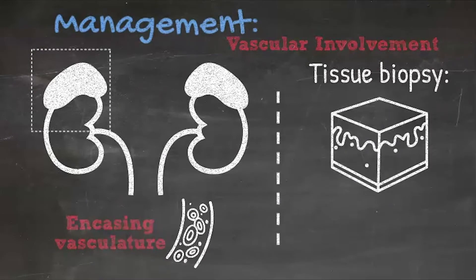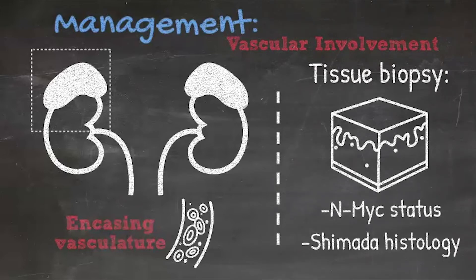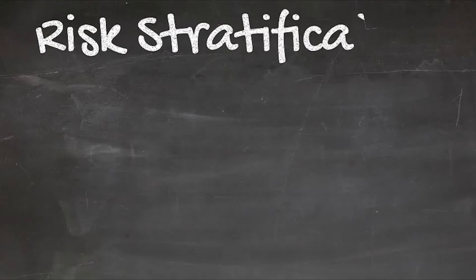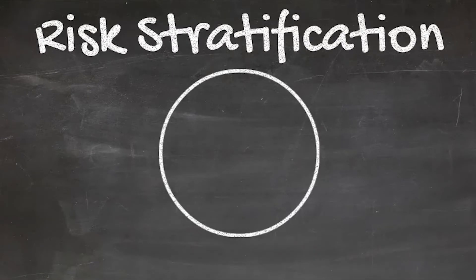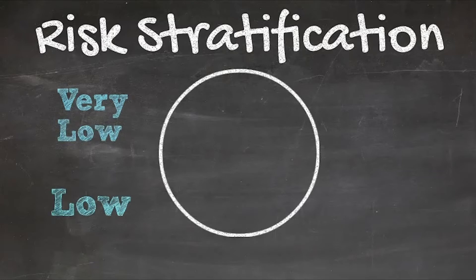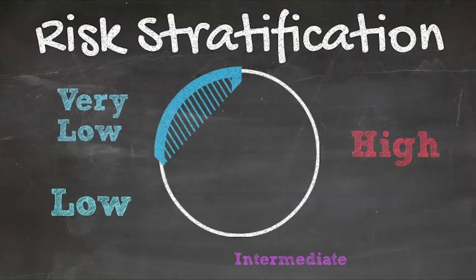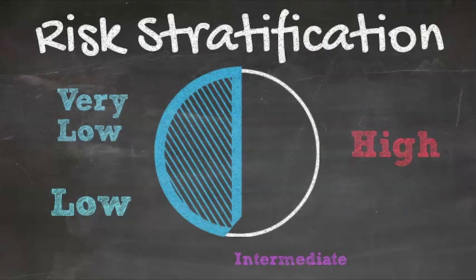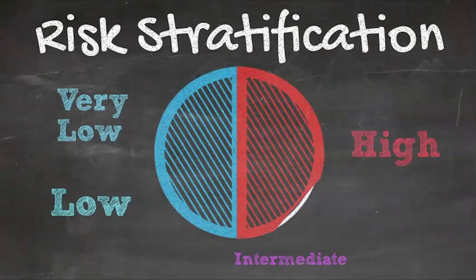What you're looking for in the biopsy results are the biologic risk determinants from the tissue. The most important of those is the NMYC status. You also want to look for 1P and 11Q deletions. But the most important things you want to know are NMYC status along with the Shimada histology. That will tell you what risk category the patient falls into — they can be either very low risk, low risk, intermediate risk, or high risk. It's divided about 50-50 between the low risk categories and the high risk category, with a smaller percentage being intermediate risk.